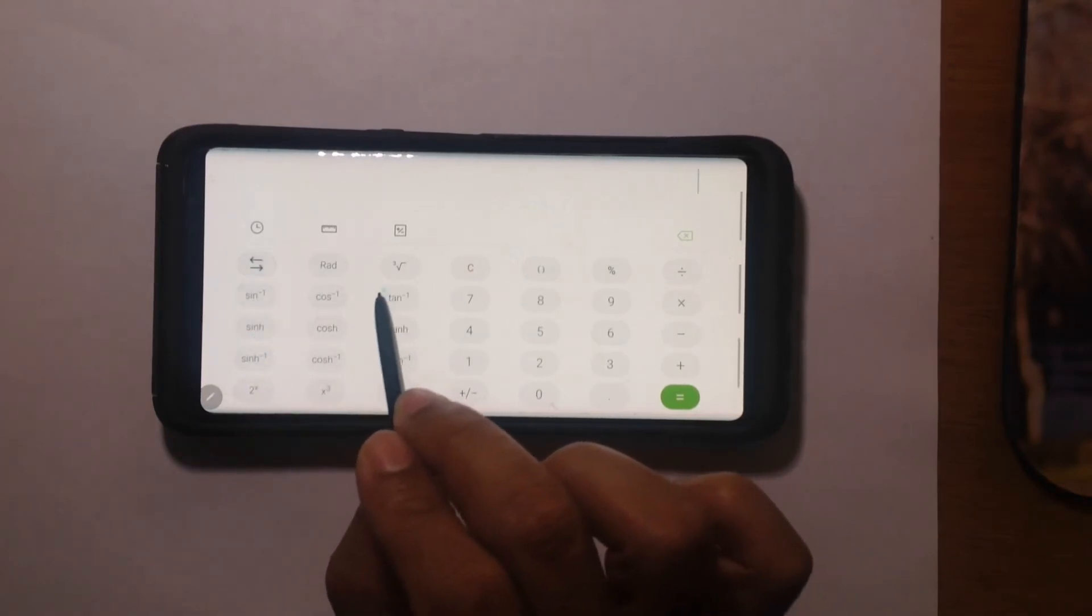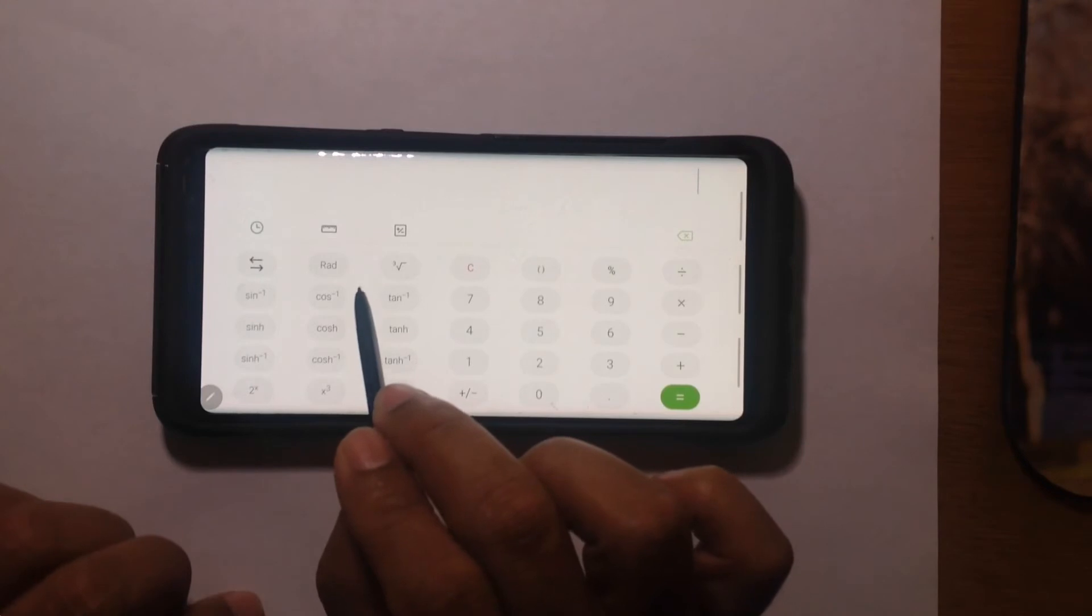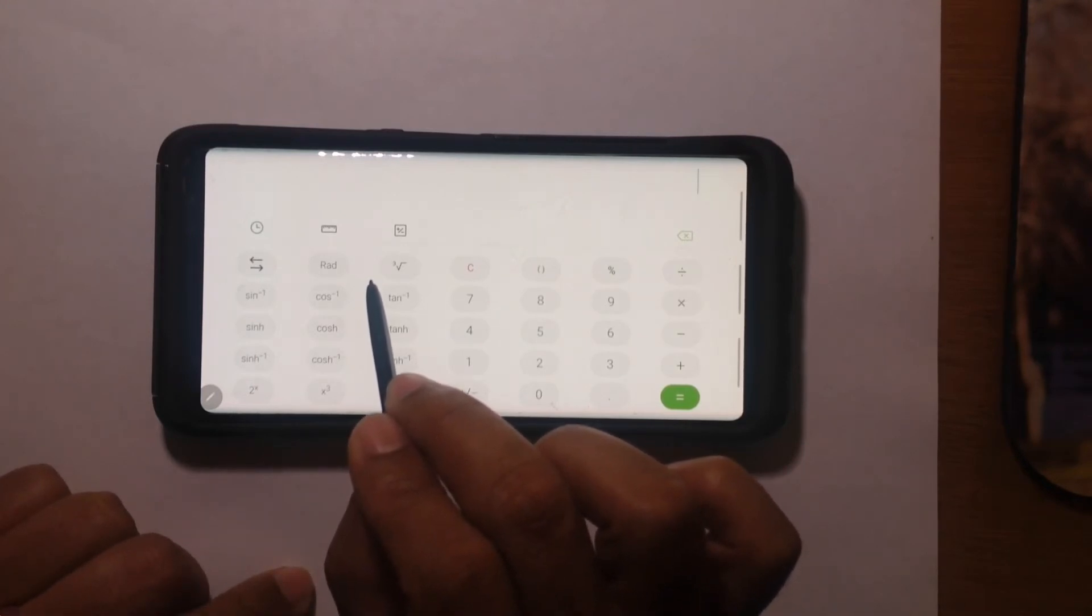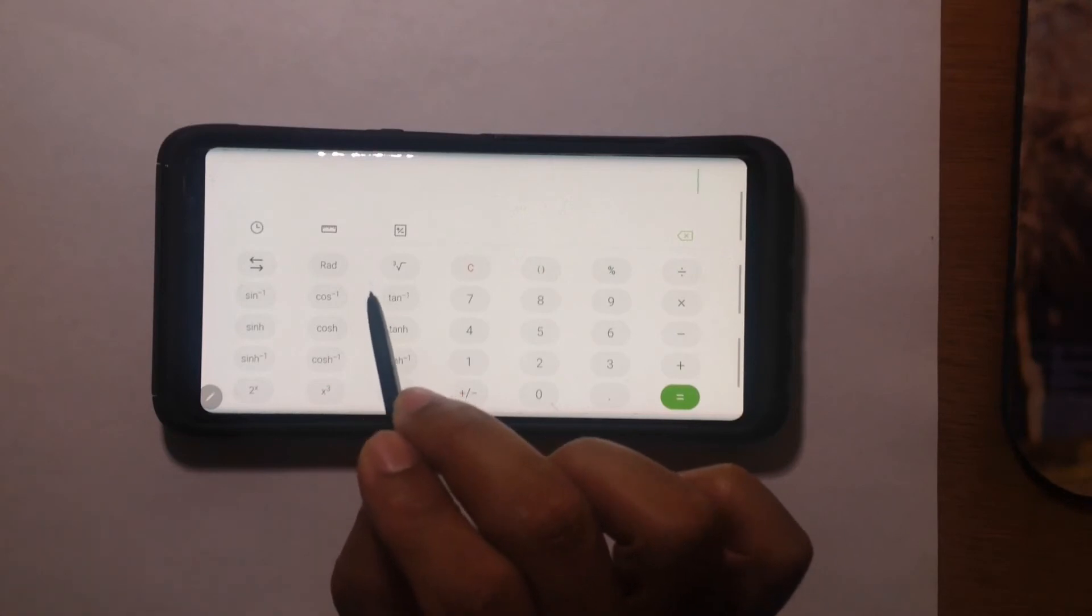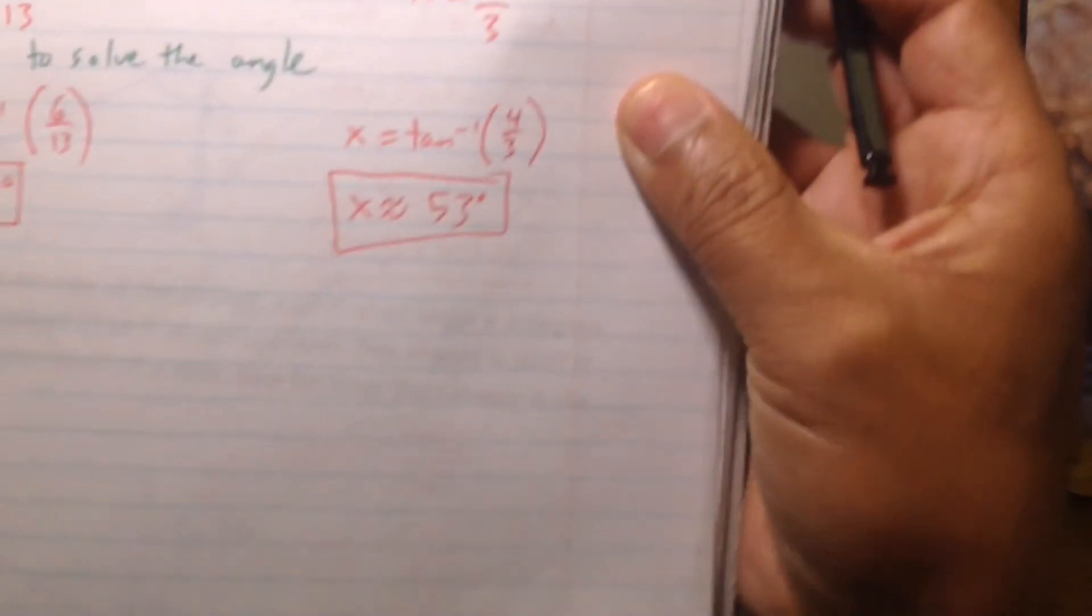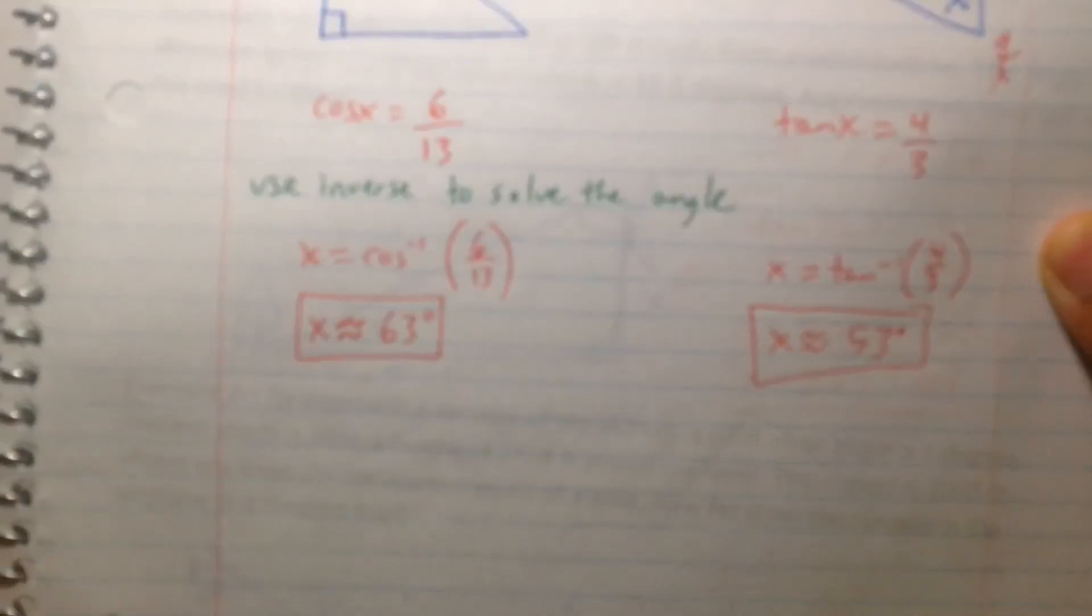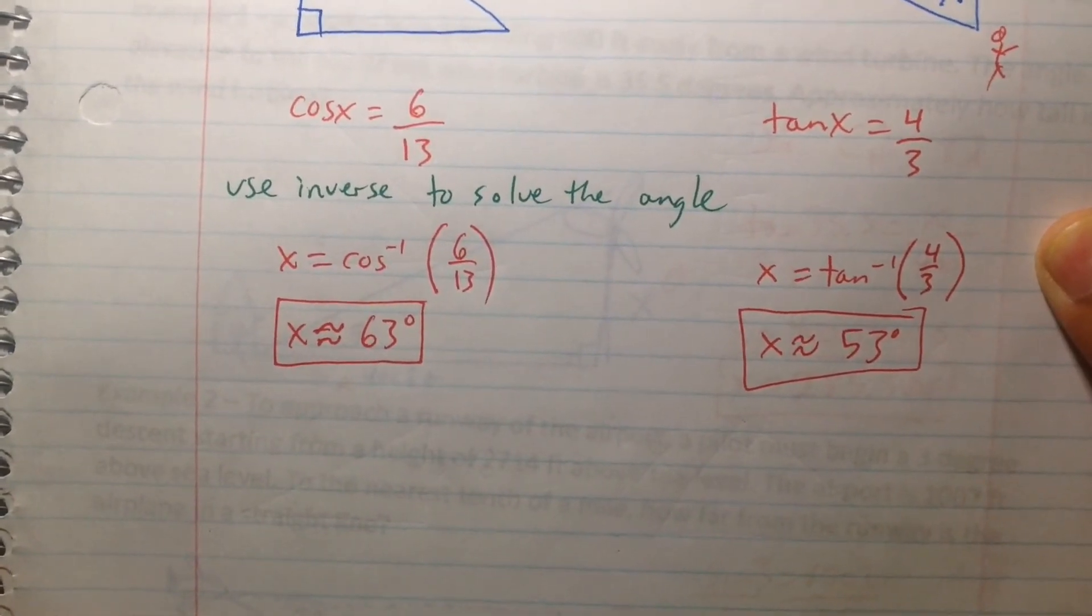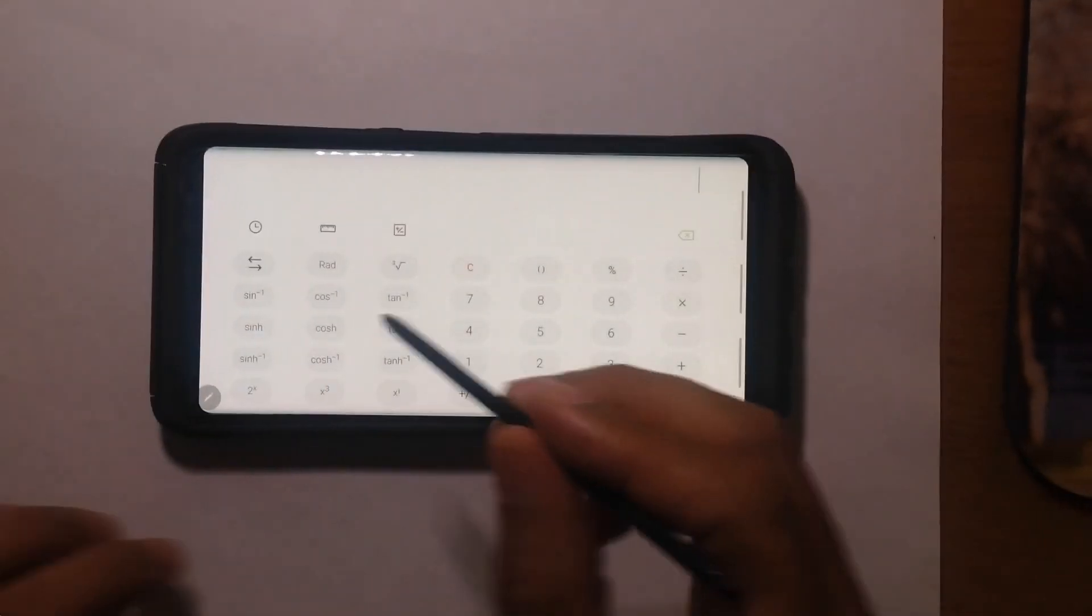So we had cosine of x equals 6 over 13. That's this problem here, this one. We said we need to use the inverse function.